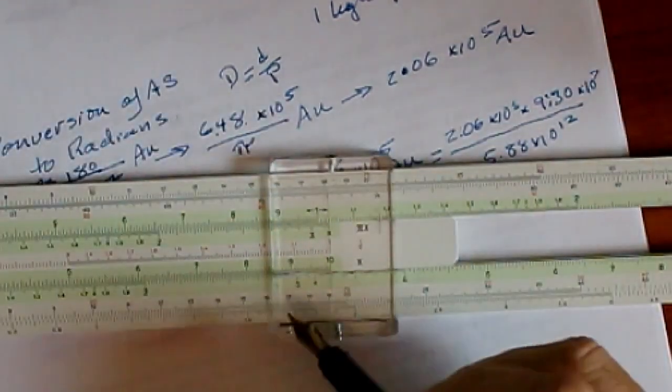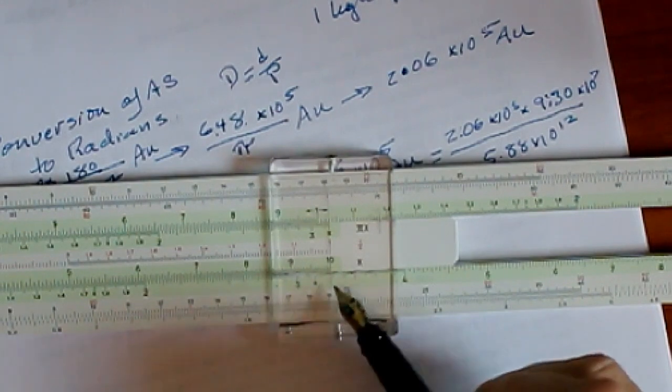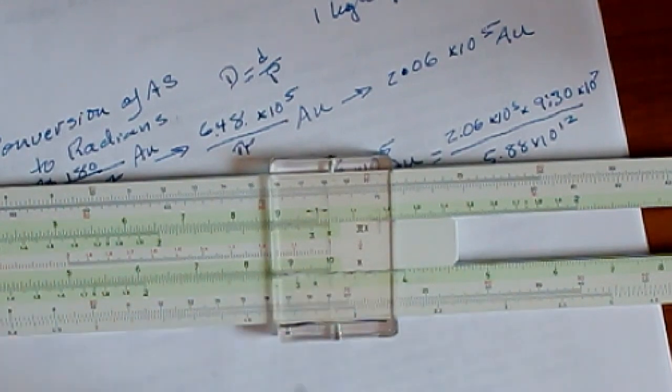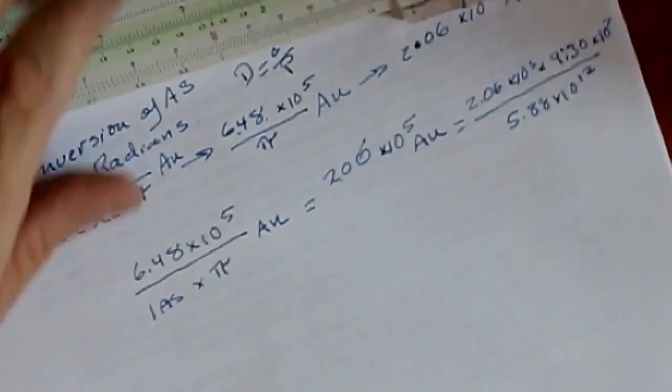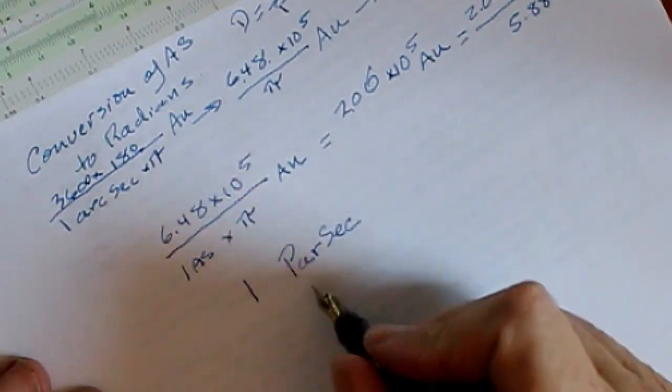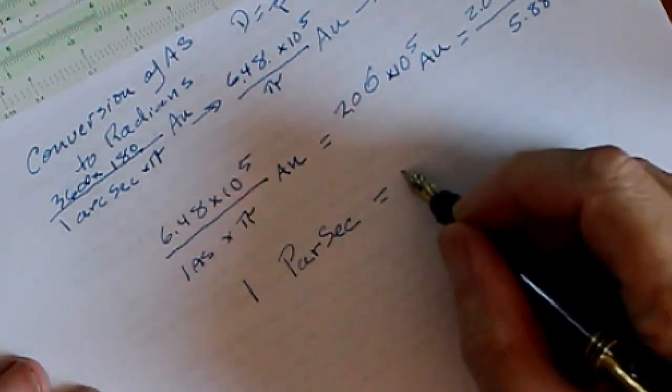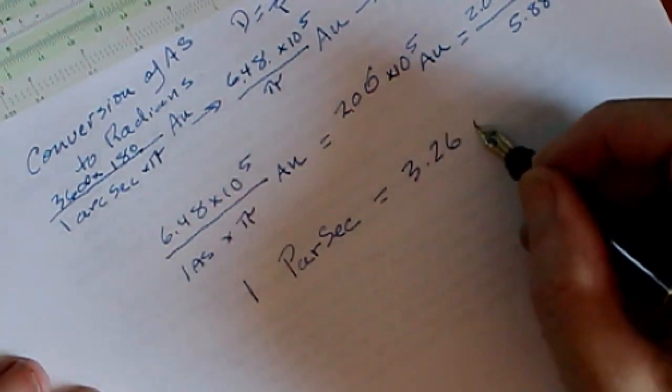And if you look at that, there's 3, 3.1, 3.2, about 3.26. So one parsec, that's parallax arc second, by the way, equals 3.26 light years.